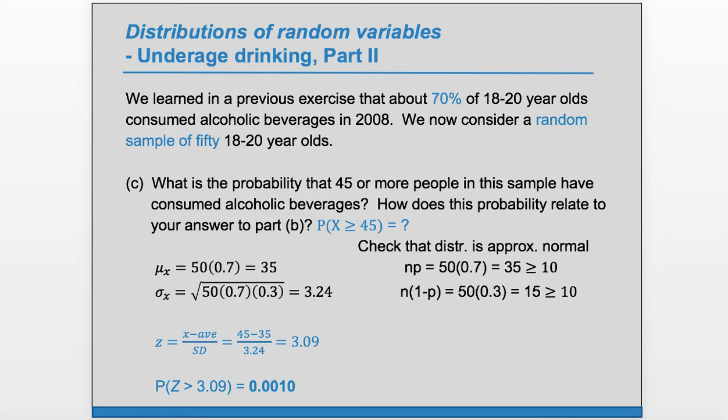So the probability that 45 or more people in the sample have consumed alcoholic beverages is approximately .001. And this is consistent with Part B. We said it would be surprising, and it's a very low probability that this would occur. So it would be unlikely or surprising.